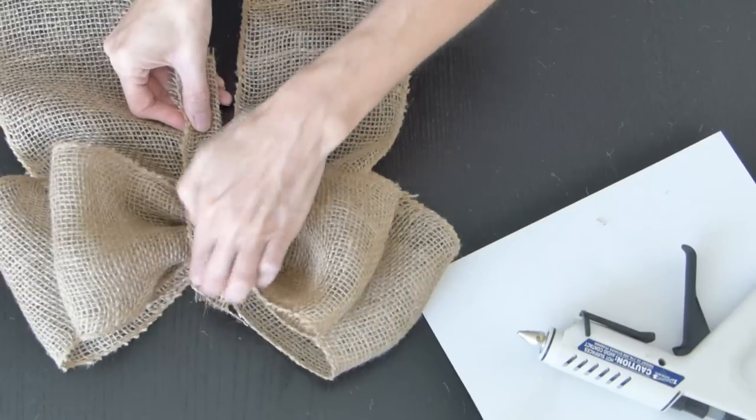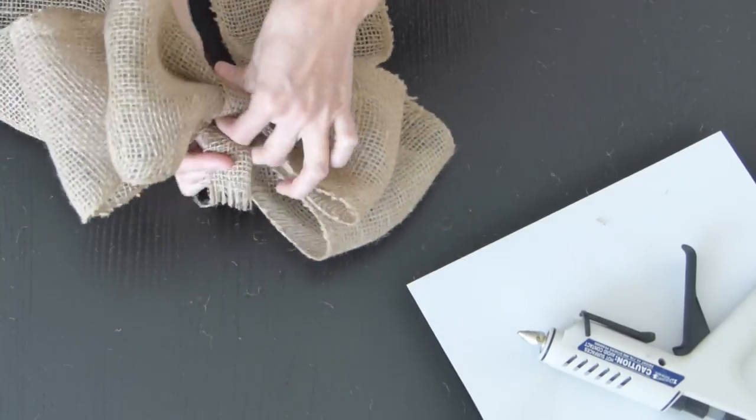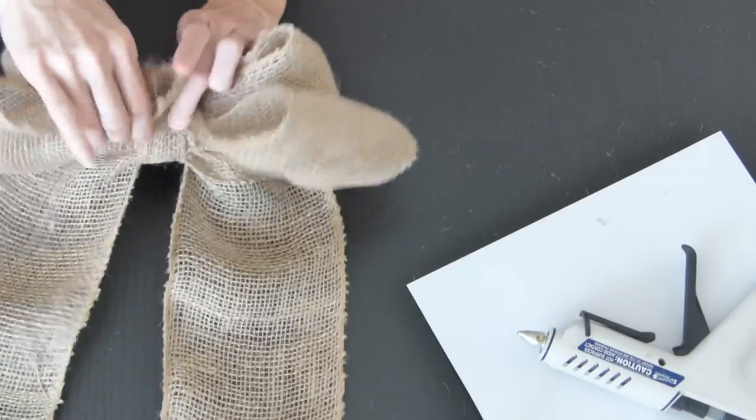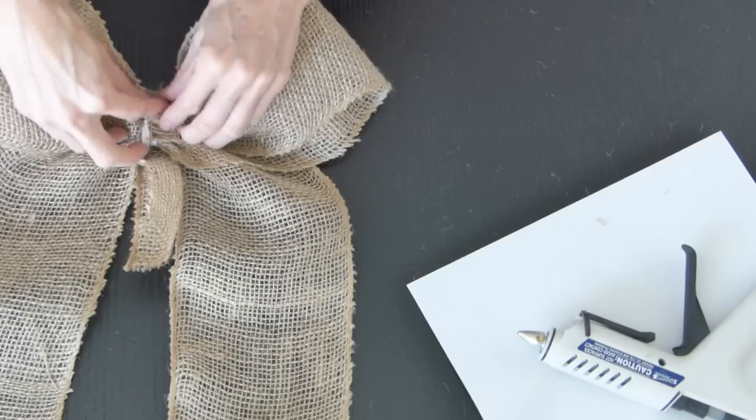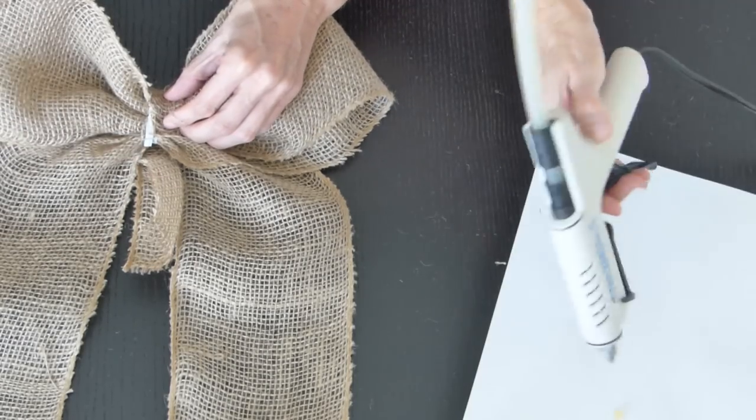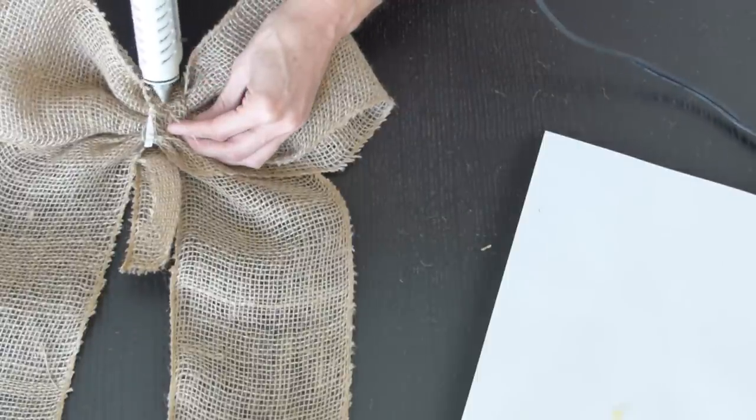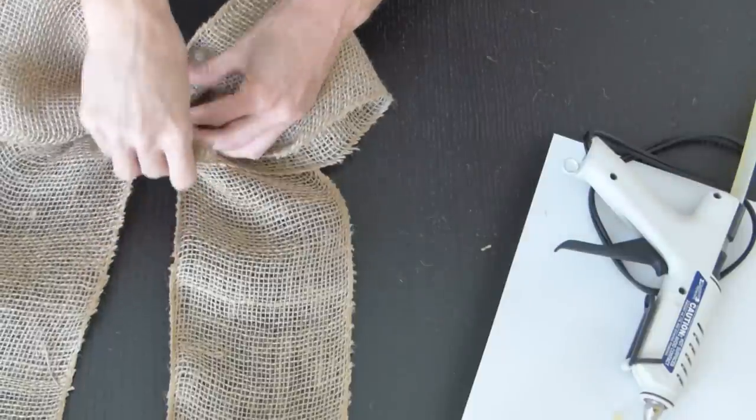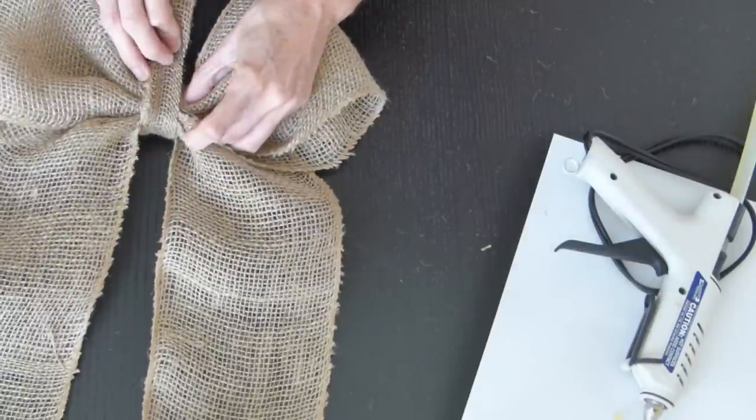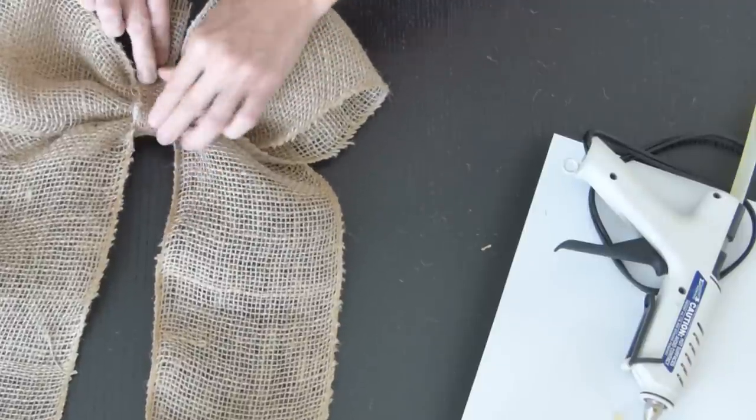Then grab your glue gun and put a little bit of glue at the back of the ribbon. That will secure the 8-inch piece of burlap ribbon. As you'll see, there's a little extra.